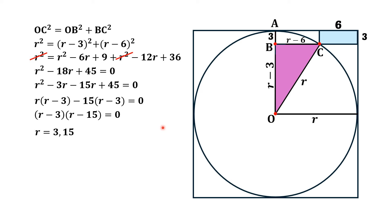From here, r equals either 3 or 15. Since this length is r and this length is 6, which is clearly smaller than r, the answer r = 3 is rejected because the radius cannot be 3 units.